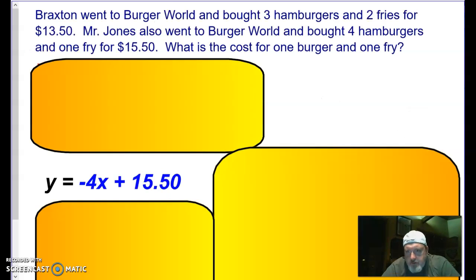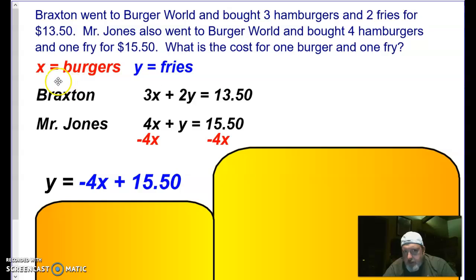All right, so Braxton here went to Burger World, and he bought three hamburgers and two fries for $13.50. Mr. Jones also went there, and he bought four hamburgers and one fry for $15.50. So first thing we'll do, we'll define our variables and get our equations. So we'll let X be our burgers, Y be our fries, and then we got our two equations. For Braxton, he had three burgers, two fries, $13.50. Mr. Jones had four burgers and one fry for $15.50.